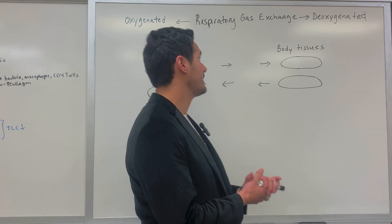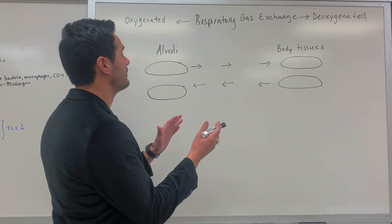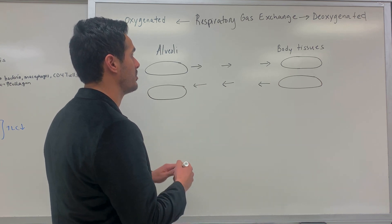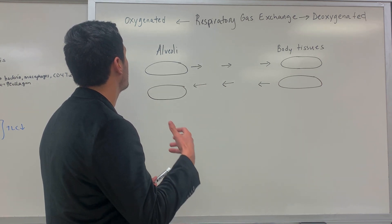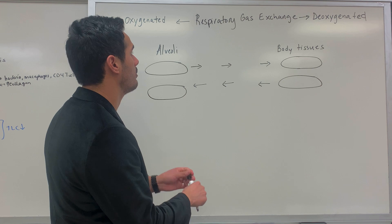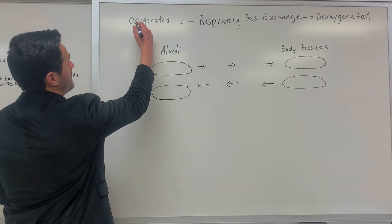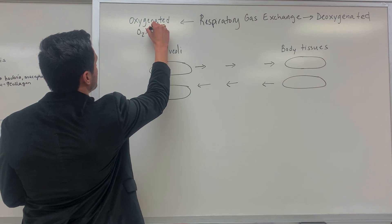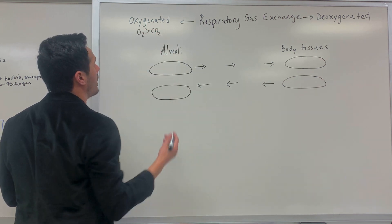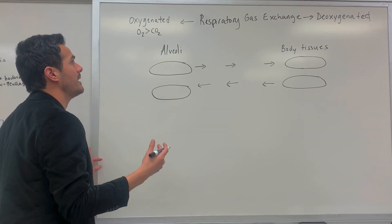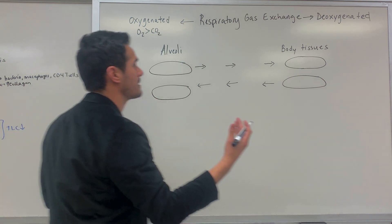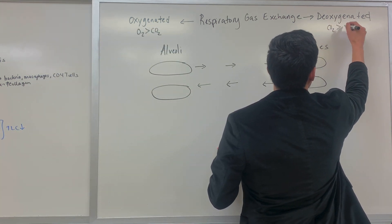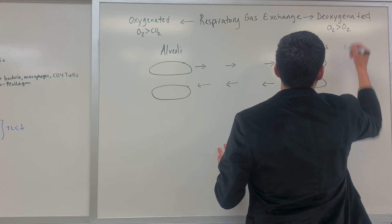The first thing we need to understand is the difference between oxygenated versus deoxygenated blood. When we say blood is oxygenated, the concentration of oxygen is greater than the concentration of carbon dioxide within the blood. In deoxygenated blood, the carbon dioxide concentration is greater than the oxygen concentration.